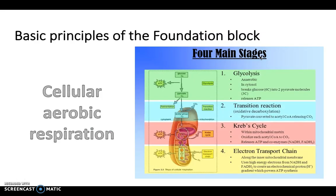So let's start by looking at a few of the basic principles of the foundation block. So this is something that you'll have probably covered at A-level, and it's the four stages of cellular aerobic respiration. We start with glycolysis, which is an anaerobic process in the cytosine. We then go to the transition reaction, or the links reaction, as it's sometimes called. Then to the Krebs cycle.